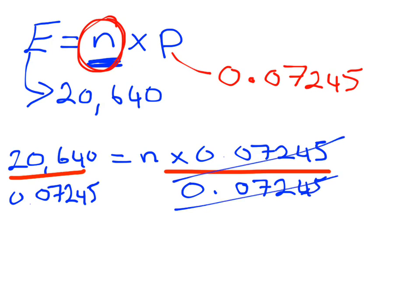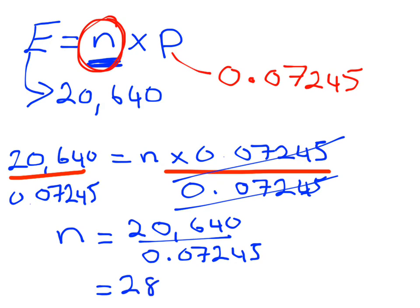It will cancel out on this side. Then I'm going to get my calculator and type in 20,640 divided by 0.07245. That's going to give me a value of 284,886.1.